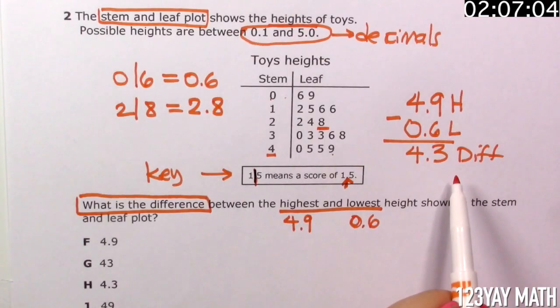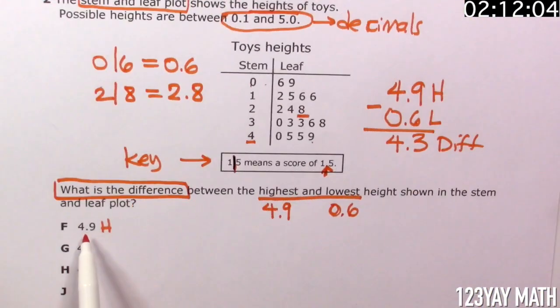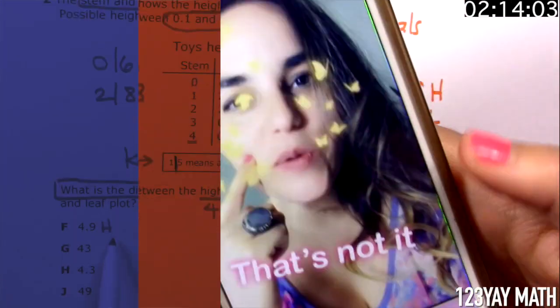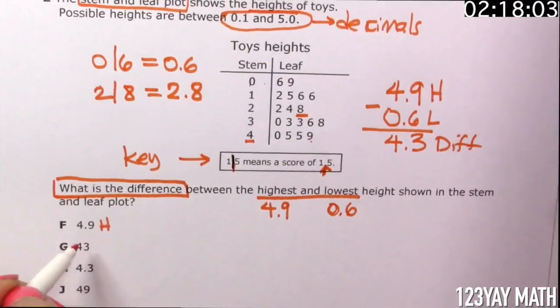Now let's look for the answer on our options. Is it F, 4.9? This looks like the highest value. Do we choose that one? No, it's not the right answer. Definitely not.